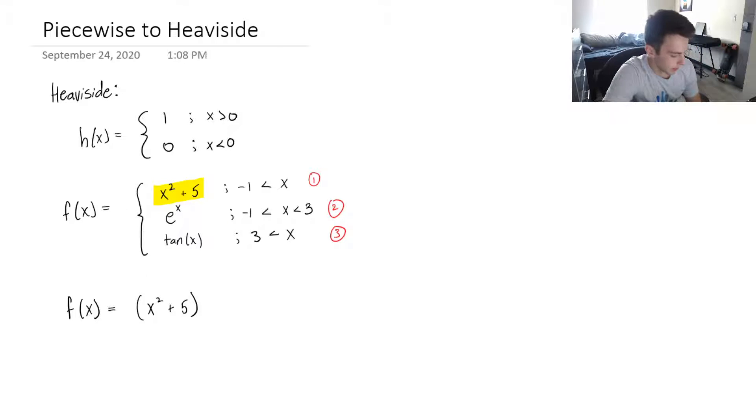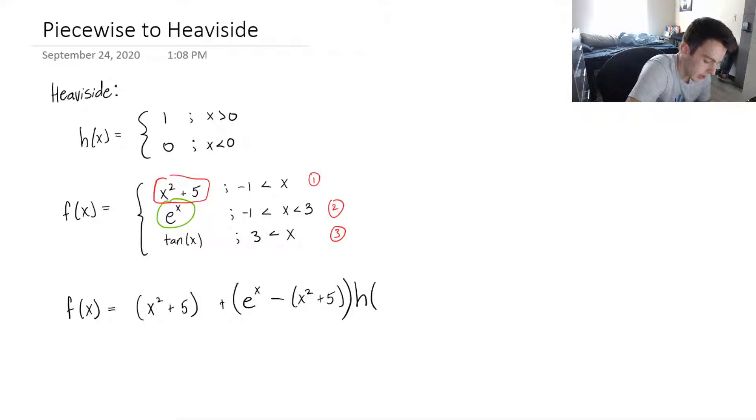Plus, what I'm gonna do is take the second function here, e to the x, and I'm going to subtract this first function—minus x squared plus five. And then on top of that, we are going to take this boundary condition here—at what point does it switch between these functions? It switches at x equals negative one.